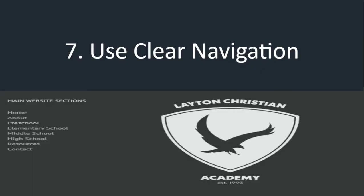Number seven: have clear navigation — that goes back to the menu panes. People should be able to clearly navigate your website. If you scroll down to the bottom of most websites like LCA's, you'll have something that lists out the main website sections. Some websites have a site map where they put the whole tree or flow chart of their website so you can clearly see it. Whatever it is, make sure people can navigate your website and find what they're looking for.